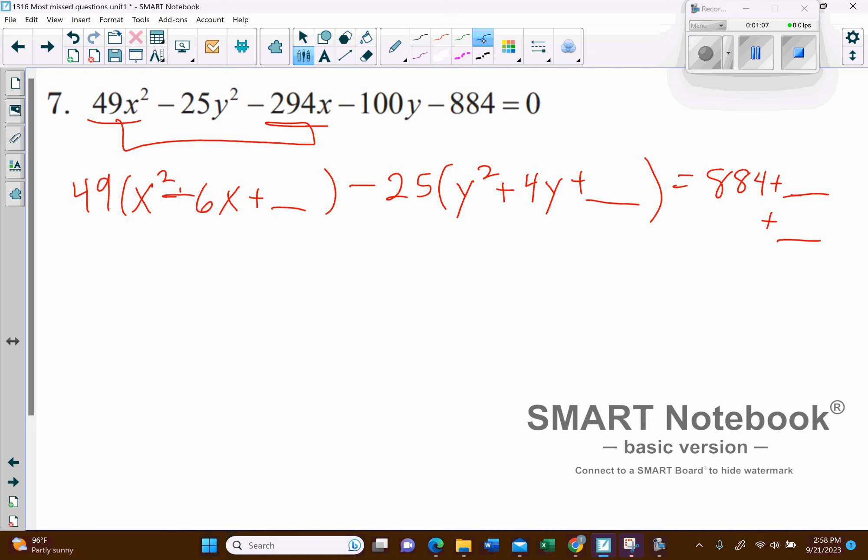So let's see, what we're going to do here is we'll go ahead and take half a negative 6 and square it, which would be a 9, right? But really, that's not 9, it's 9 times 49.